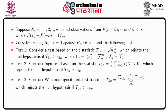For this testing problem we have three types of tests. Test 1 is based on T_{1n} equal to root(n) times x-bar divided by s_n, which rejects the null hypothesis against theta greater than c_{1n}, where (n-1)*s_n squared equals the sum of (x_i minus x-bar) squared. Test 2 is the sign test with statistic T_{2n} equal to (1/n) times the sum of I(x_i greater than 0) divided by n, which rejects if T_{2n} is greater than c_{2n}.